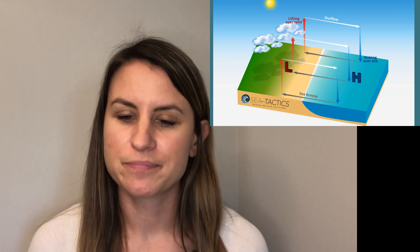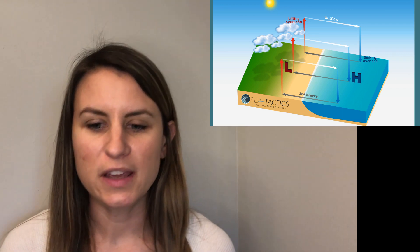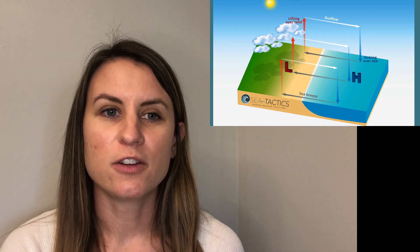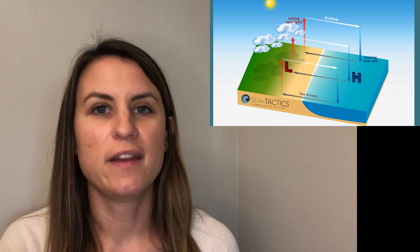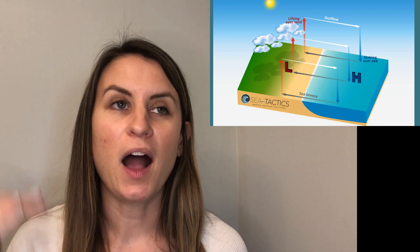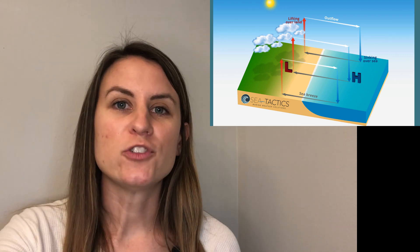This is a critical piece of the sea breeze circulation that not everyone thinks about. You need not only the lifting over land and sinking over the sea, but in order to get the sea breeze to flow you have to get that fourth component at the upper levels — higher up in the atmosphere, the offshore blowing component. This is where the gradient wind comes in.